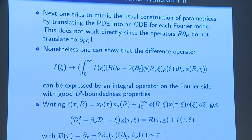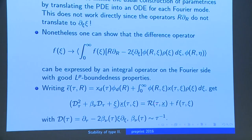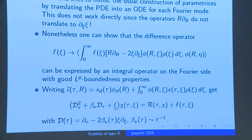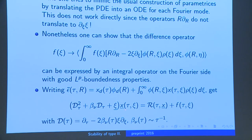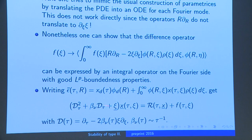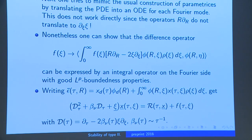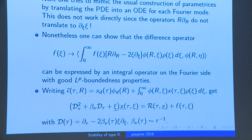You use the Fourier representation of ε̃ and recast your equation in terms of its Fourier modes. You have the principal part with a dilation operator applied to x̂, and then there is something hideous which depends linearly on x̂, plus everything left from all the nonlinear interactions and so forth.